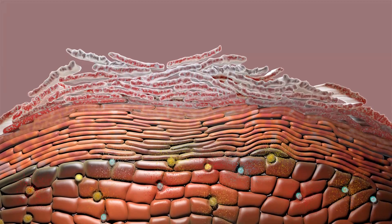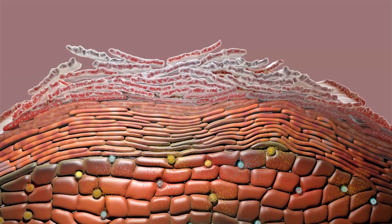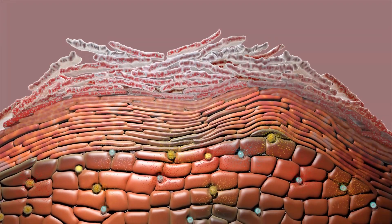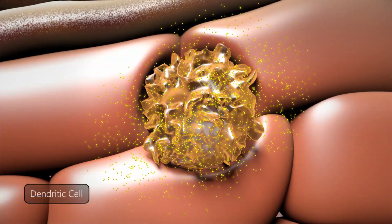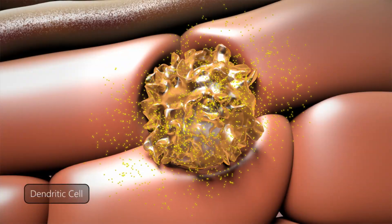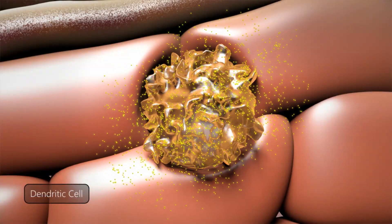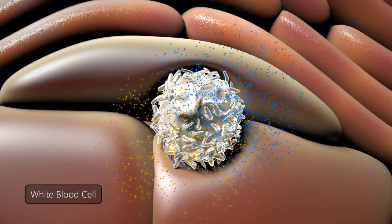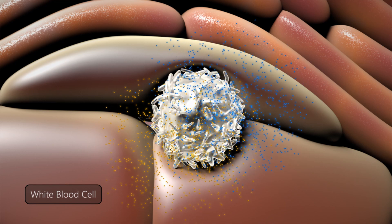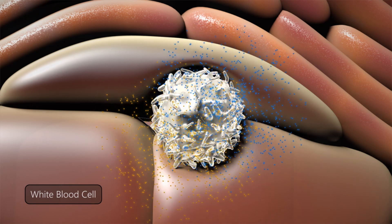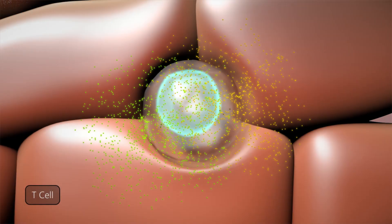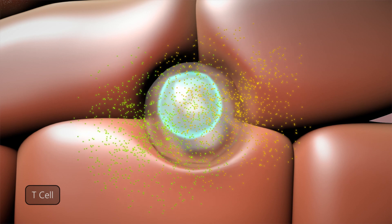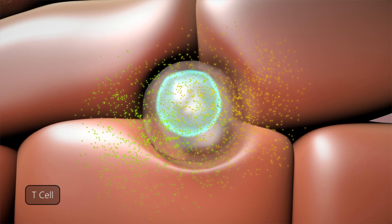Here we take a look at how psoriatic plaques form. When triggered, immune cells within the skin and elsewhere produce cytokines, also called interleukins or ILs, one of the ways the body mounts a response to a perceived insult or threat.